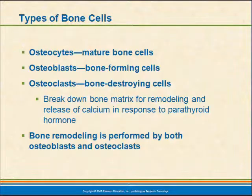There are certain types of bone cells involved in the development and maturation of bone. We have osteocytes, which are mature bone cells living in compact bone in the lacunae located in the lamellae. We have osteoblasts, which are bone-forming cells, and osteoclasts, which are bone-destroying cells. Remodeling and reshaping of bone is performed by both osteoblasts and osteoclasts.